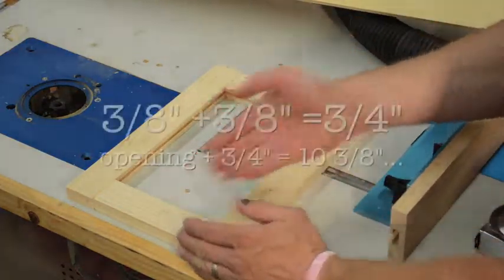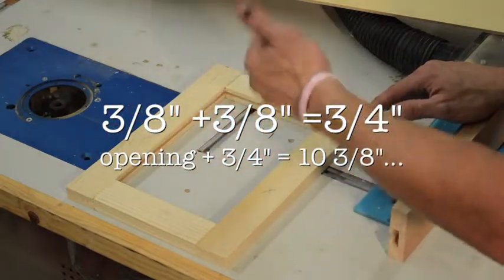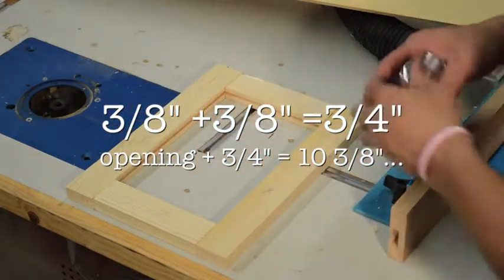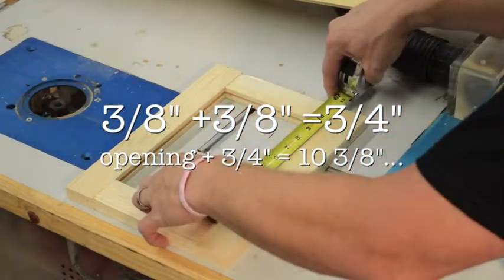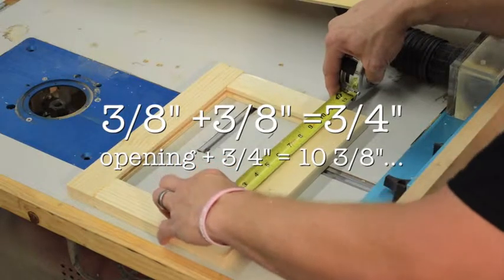You have 3 eighths of an inch of a groove, 3 eighths of an inch of a groove, which is 3 eighths, 3 eighths is 3 quarters. So you're going to add 9 and 5 eighths. You're going to add 3 quarters of an inch to that.